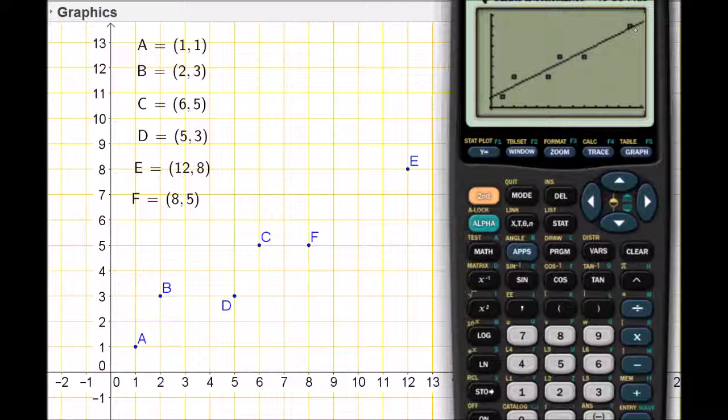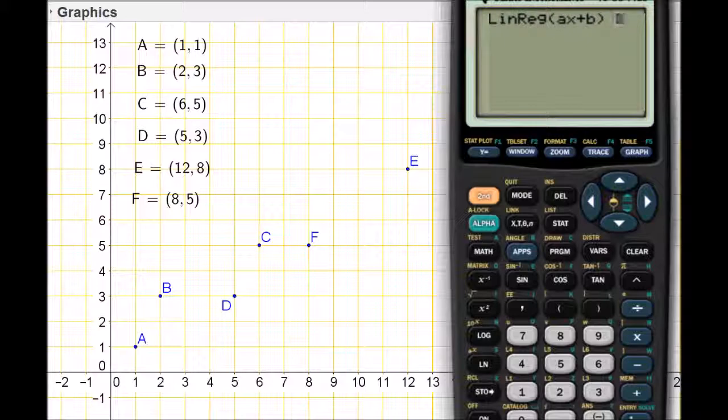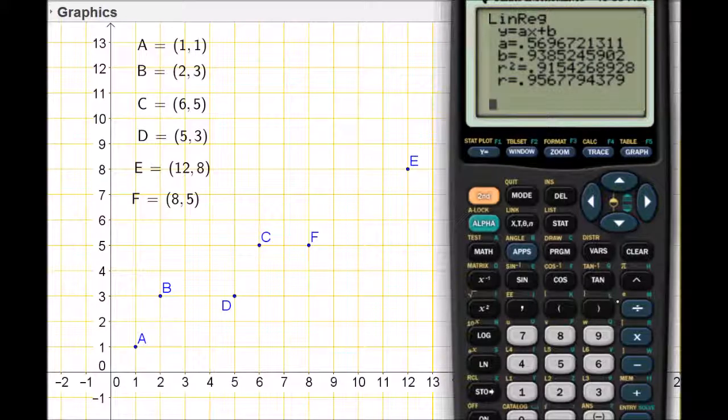To calculate the line of best fit, remember, it's statistics, went to calculate and down to option number four. Once we are looking at this, we can see that the line of best fit is y equals 0.57x plus 0.94 and our correlation coefficient, which I have not talked about in this video, is 0.96 if I'm rounding. I think we're going to stop it there. That's enough for this video.